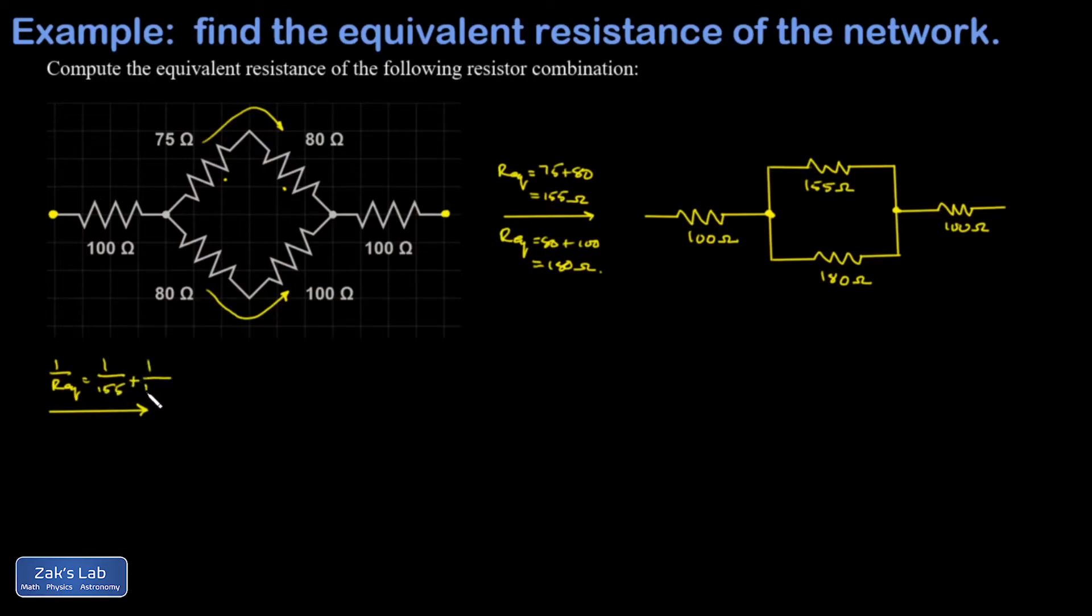Type those into your calculator: 1/155 + 1/180, and then say 1 over that answer. When you do that, you get 83.3 ohms.